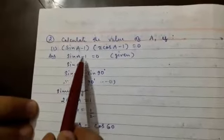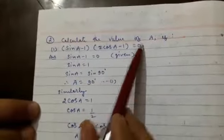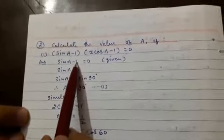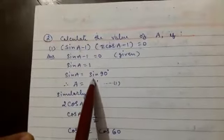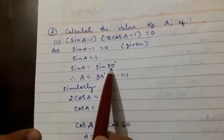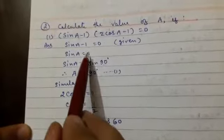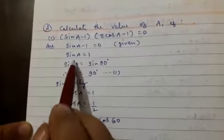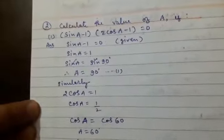Now we will see question number 2: calculate the value of A. First part: (sin A − 1)(2 cos A − 1) = 0. So, taking sin A − 1 = 0: sin A = 1 after transposing −1 to the right-hand side. Since sin 90° = 1, we write sin A = sin 90°, sin cancels out, therefore A = 90°.